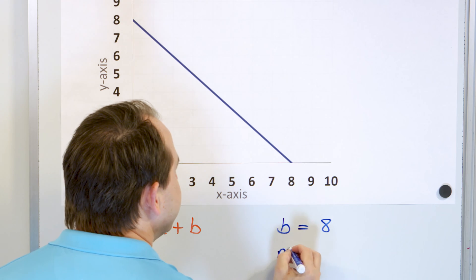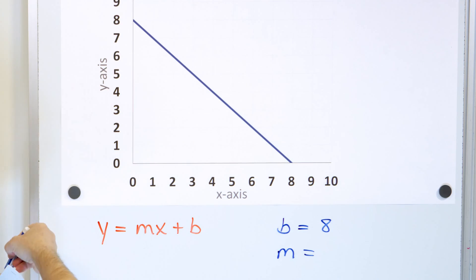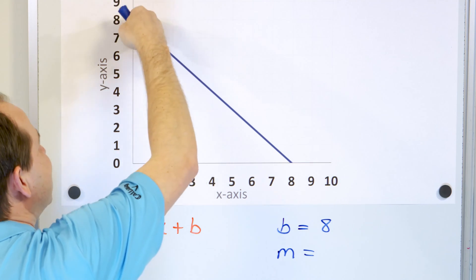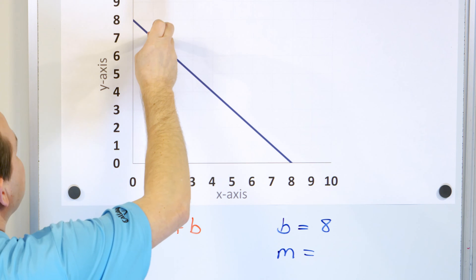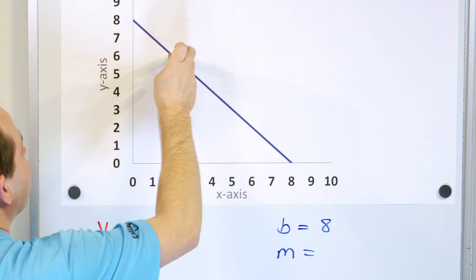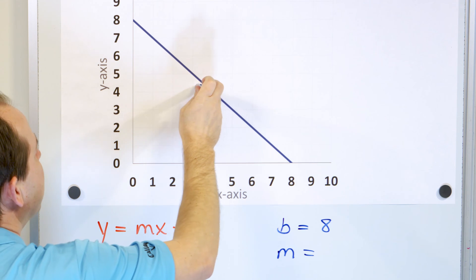Next, we try to figure out what the slope is, and we can get that from looking directly at the graph as well. Now, this graph is slanting downward, so we know it's a negative slope. We go down 1 over 1. There's another point on the line. Down 1 over 1, down 1 over 1, down 1 over 1.